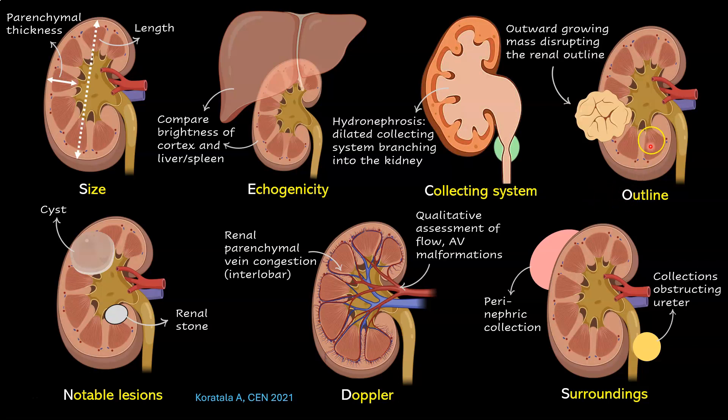O stands for outline. It is always important to pay attention to the outline of the kidney and see if there are any interruptions or alterations in the shape, because most kidney masses tend to grow outward. As most kidney masses are found incidentally on imaging, even if your purpose is to just rule out hydronephrosis, it is important that we do not miss any mass.